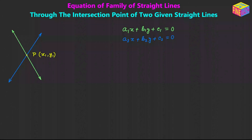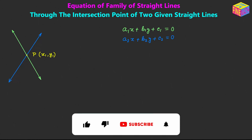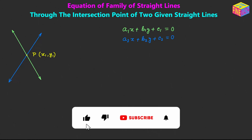Hi everyone. In this video we are going to see how to find the equation of the family of straight lines passing through the point of intersection of two given straight lines. Let's suppose we have two straight lines whose equations are given and their point of intersection is the point P, with coordinates x₁, y₁.